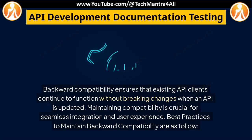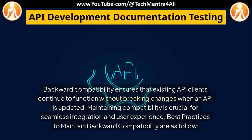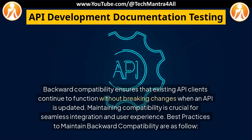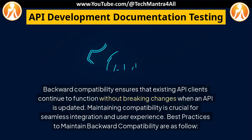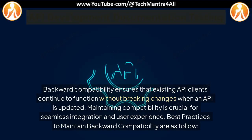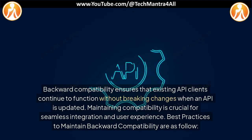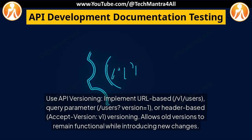How do you ensure backward compatibility when updating an API? Backward compatibility ensures that existing API clients continue to function without breaking changes when an API is updated. Maintaining compatibility is crucial for seamless integration and user experience. Best practices to maintain backward compatibility are as follows.